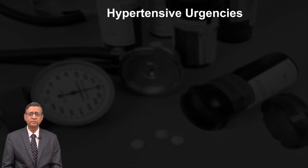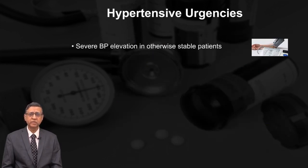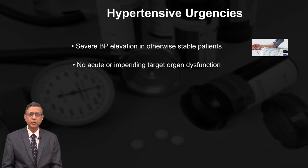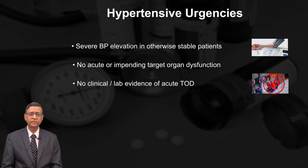Hypertensive urgency involves stable patients with severe elevation of BP in otherwise stable conditions. There is no acute or impending target organ dysfunction, and there is no clinical or laboratory evidence of acute target organ damage.